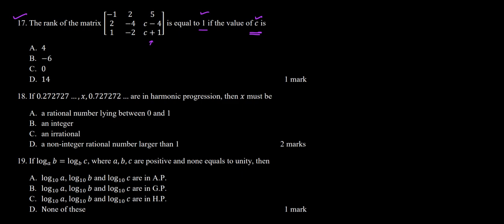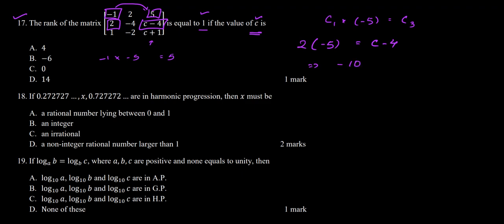From the first row we see minus 1 and 5, so multiplying column 1 by minus 5 gives column 3. Multiplying minus 1 by minus 5 gives 5, satisfying the first row. For the second row we have 2 and C minus 4, so: 2 times minus 5 equals C minus 4, giving minus 10 equals C minus 4, hence C equals minus 6.